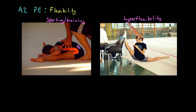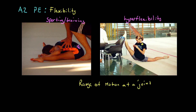So let's first of all describe and define what we mean by flexibility. Flexibility is quite simply the range of movement, or the range of motion, at a joint. We see the extent of the flexibility in this case of this performer's hip joints and her ankles, and in this case the flexibility of this young man's spine.